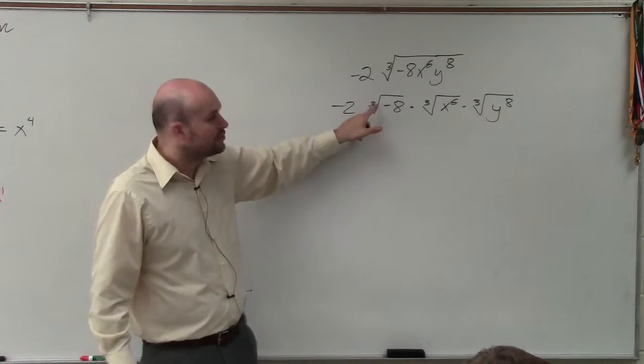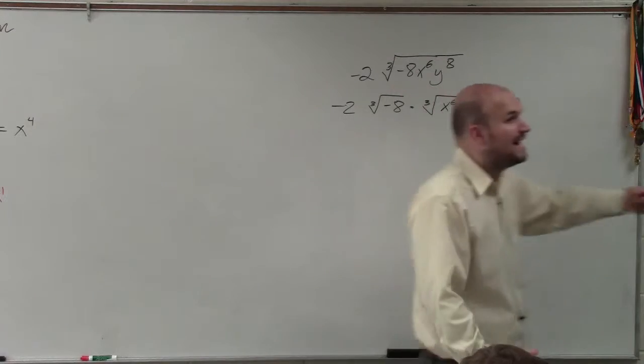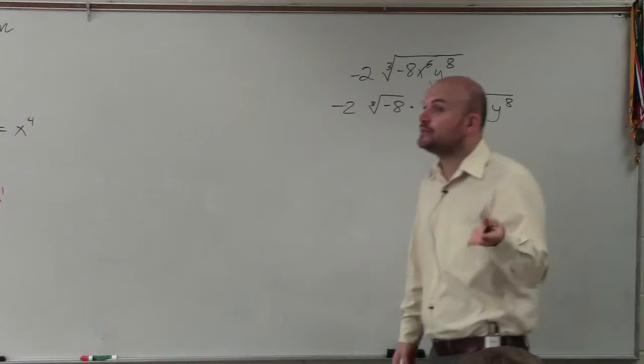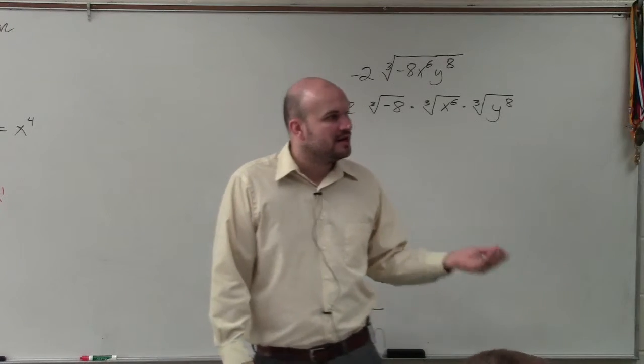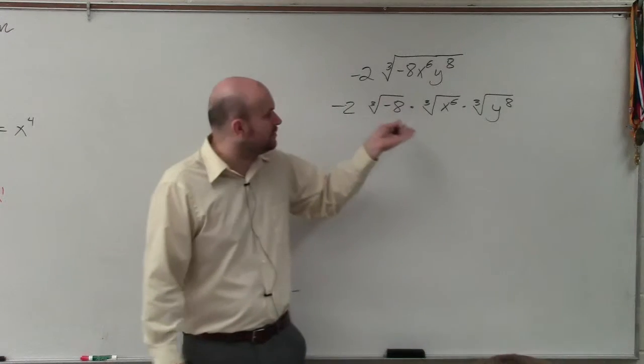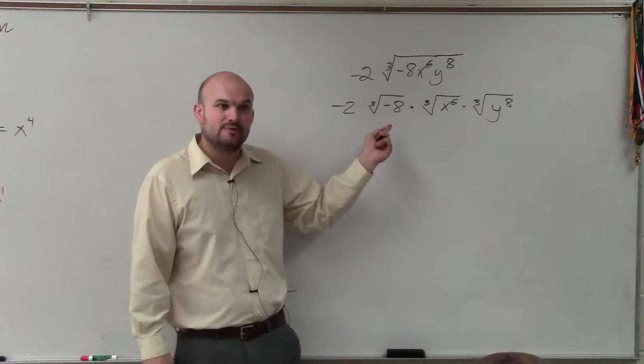So the cube root is saying what number multiplied by itself three times gives us negative 8. Now remember, when we're talking about even roots—square root, fourth root, sixth root—we cannot take the even root of a negative number. But for the odd root, we can.